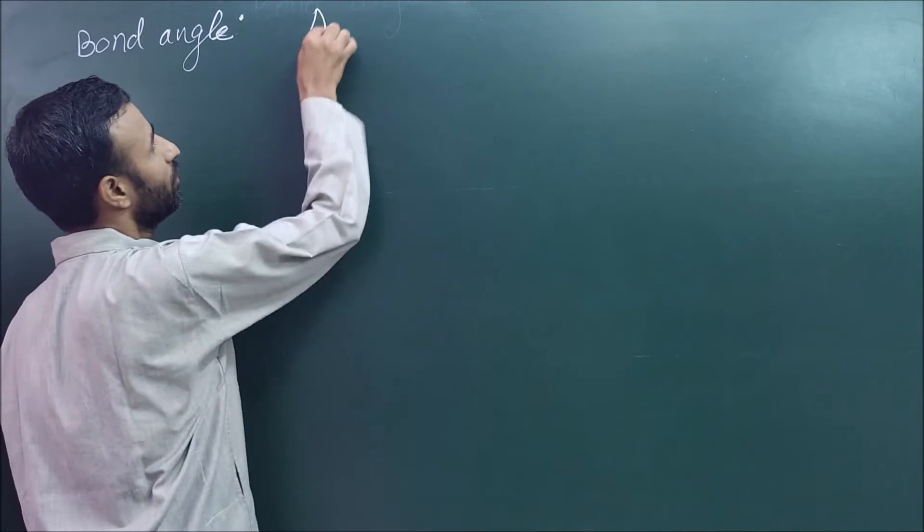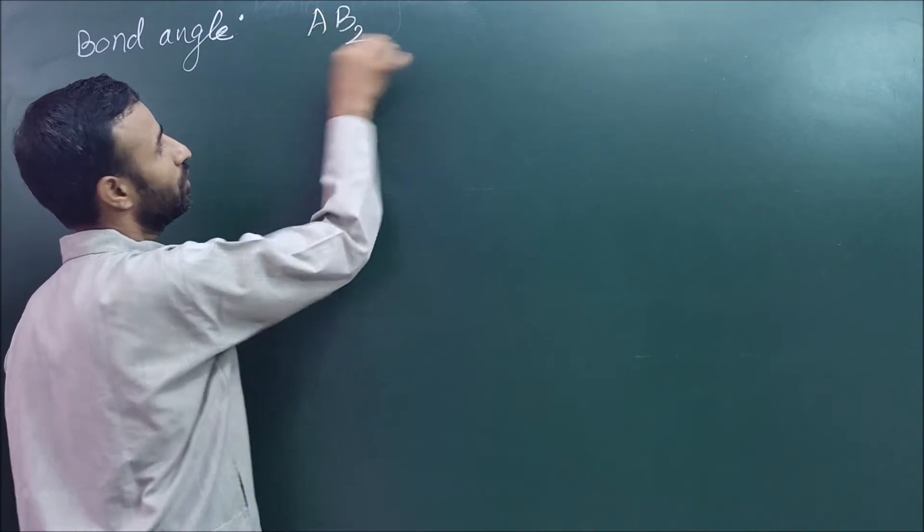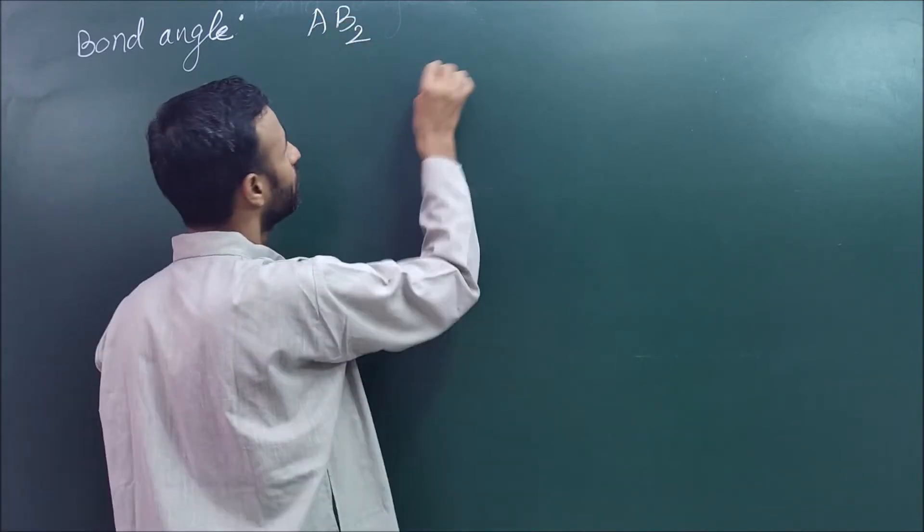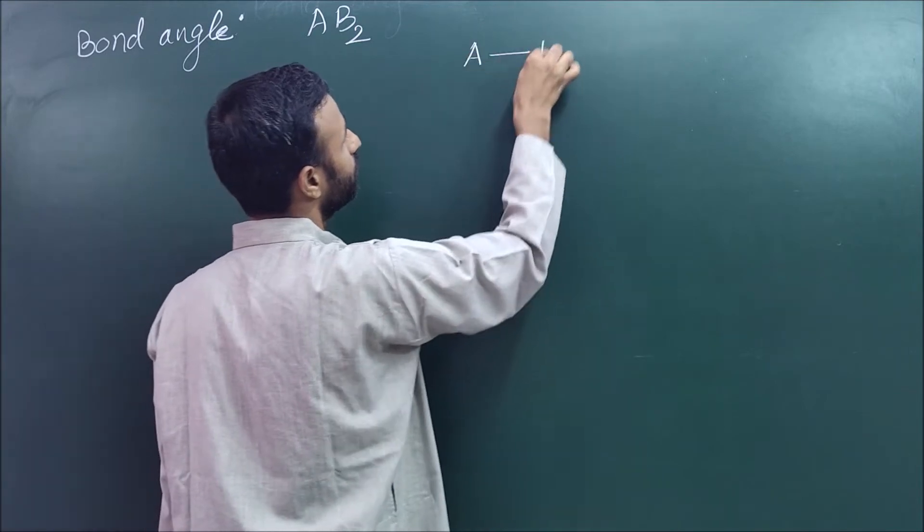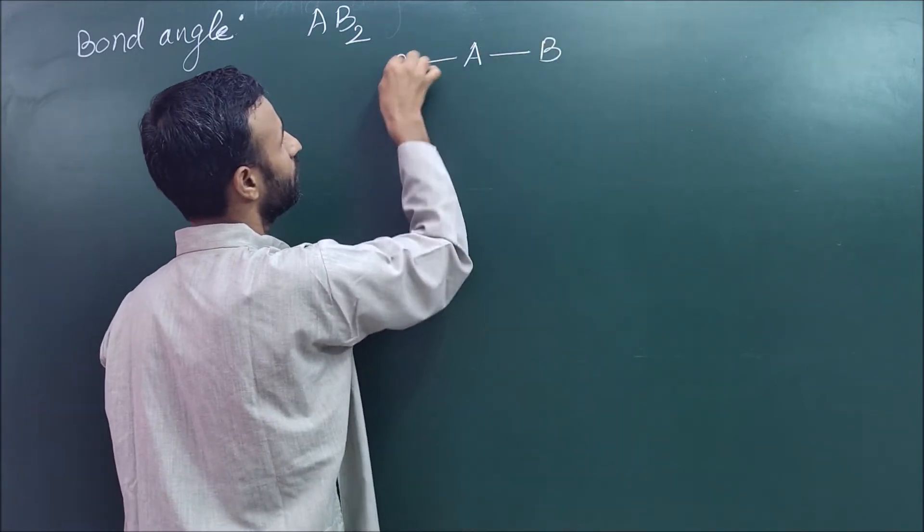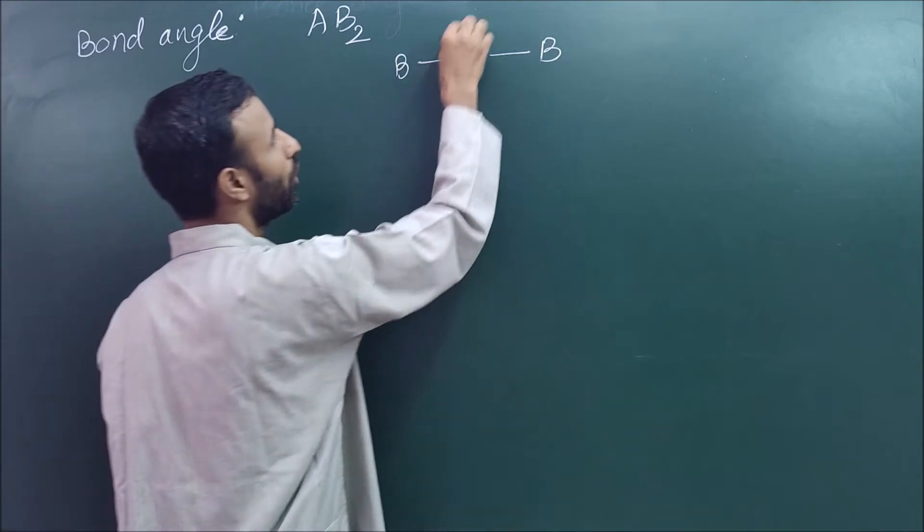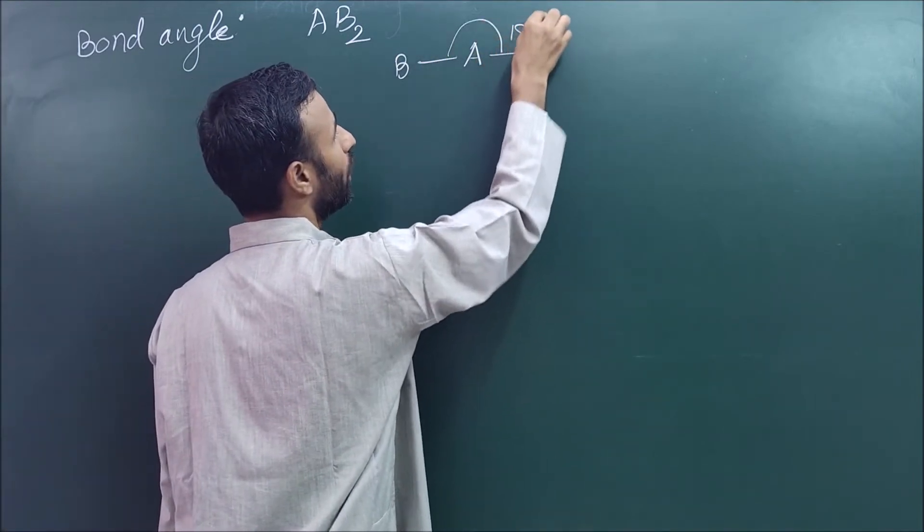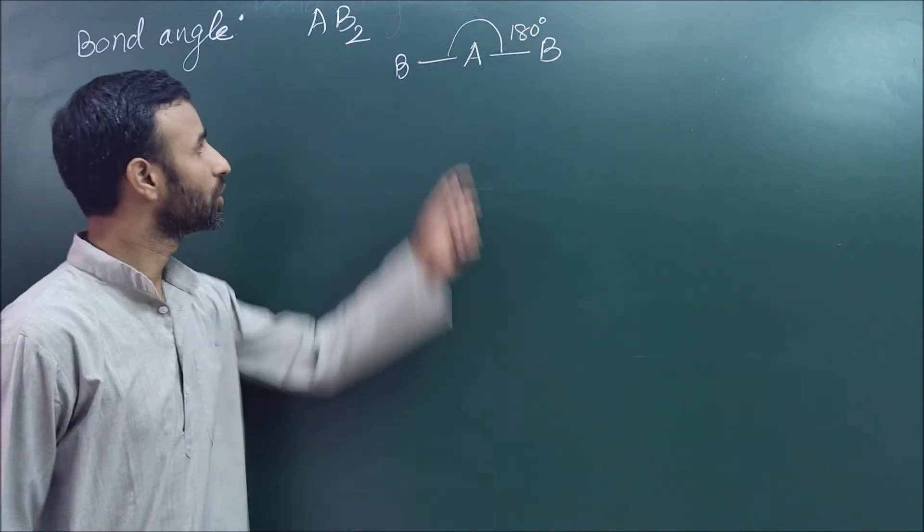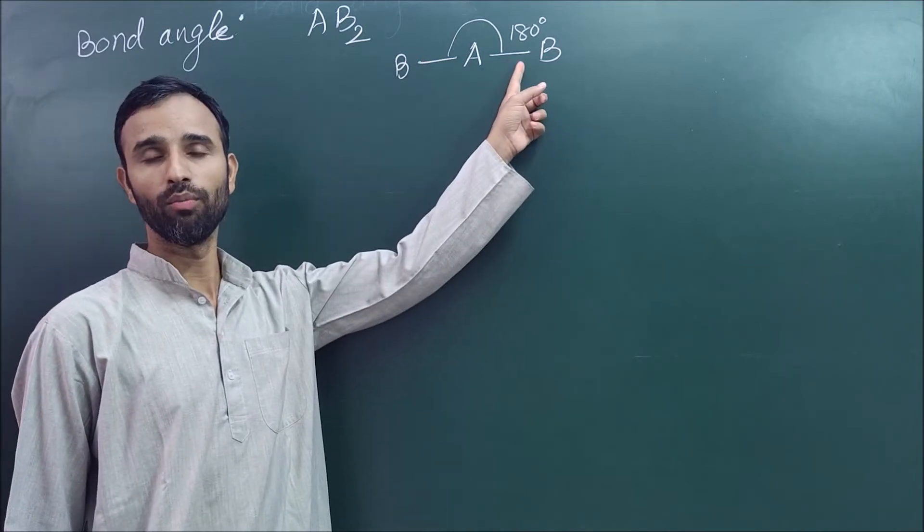For example, if we have two bond pairs, the angle between these two bonds is 180 degrees. This is the angle between two bond pairs.